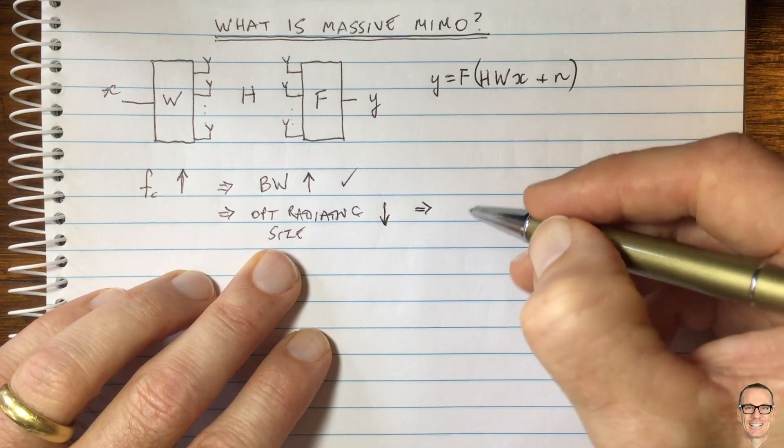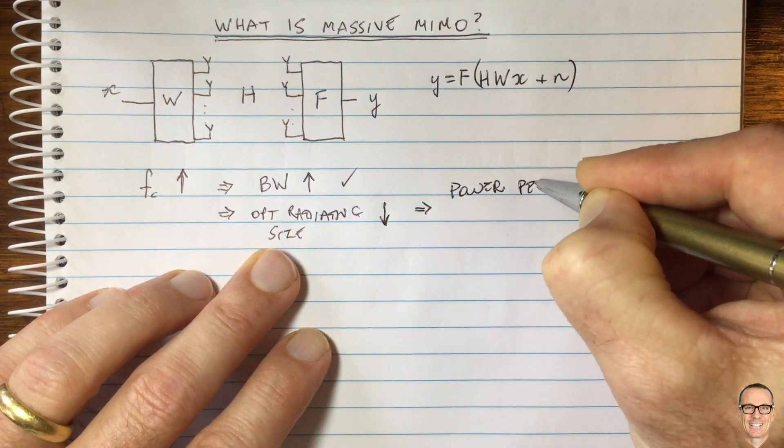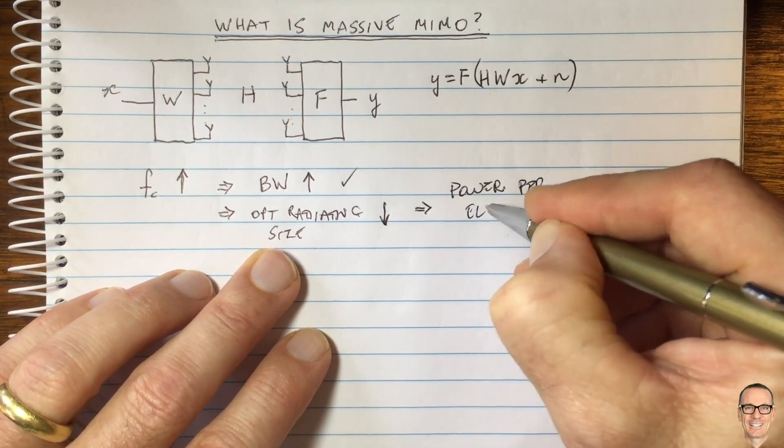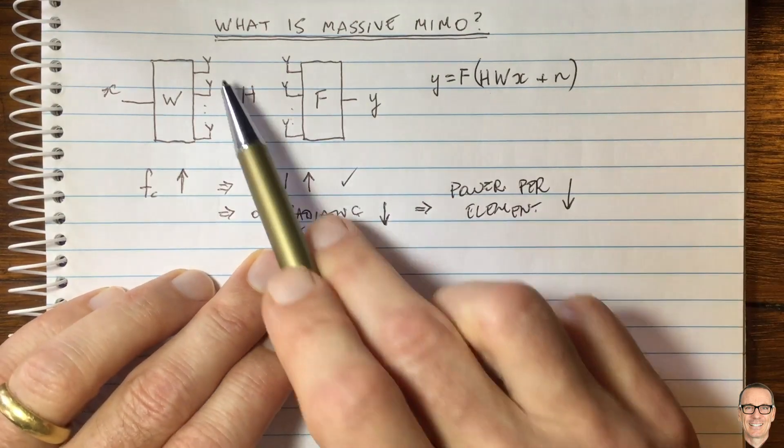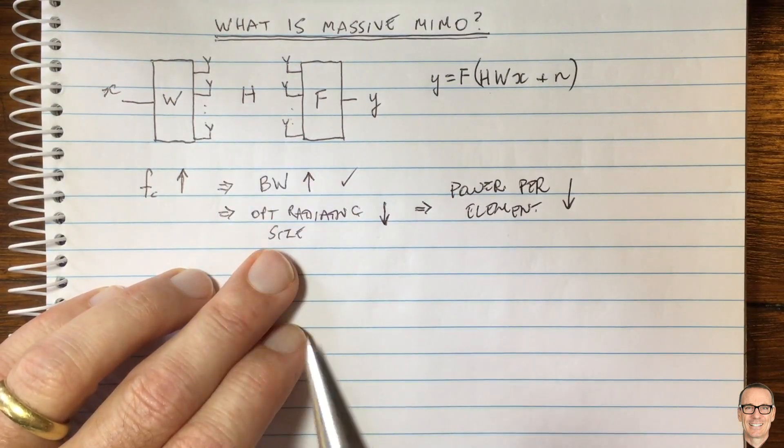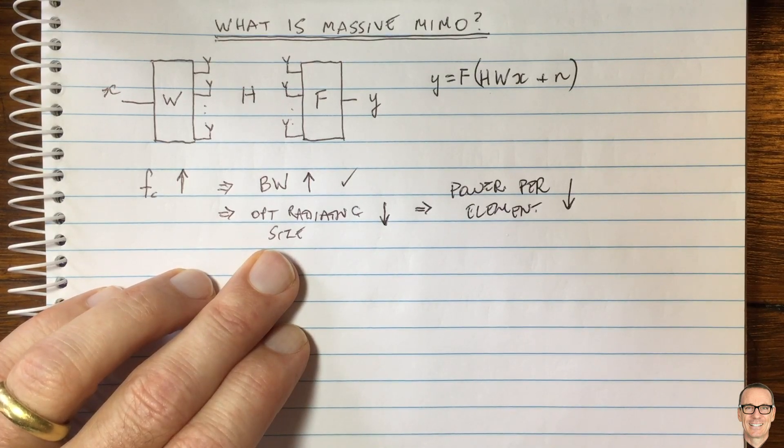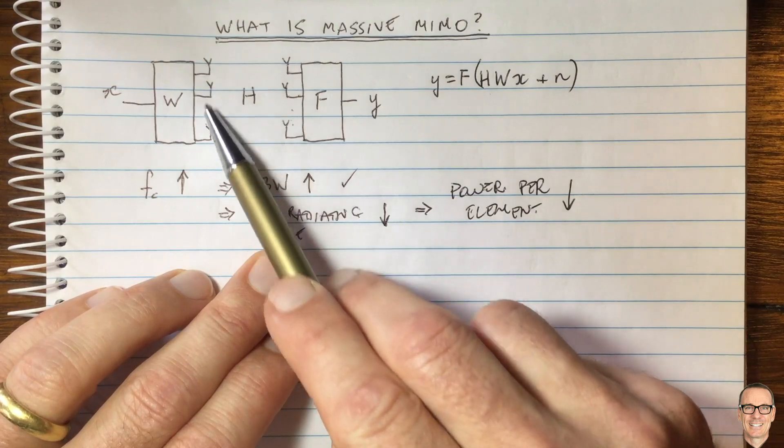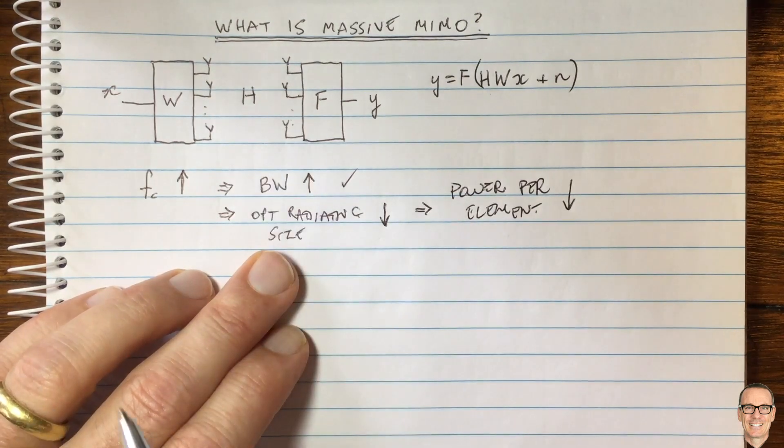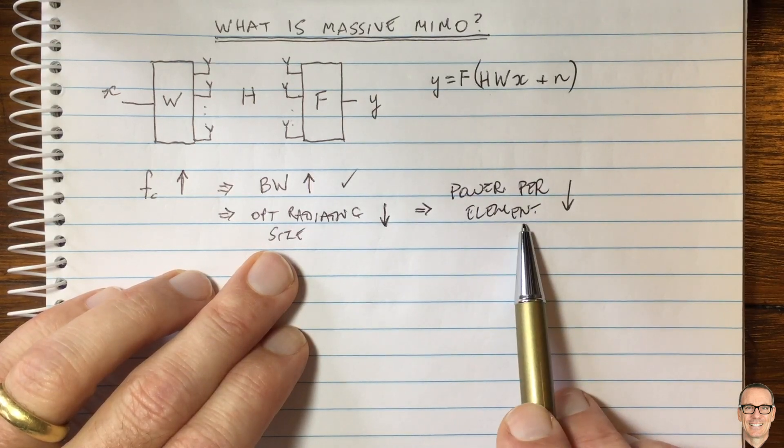This means that the power per element that you can transmit with also comes down. Smaller antenna elements means you're dealing with smaller pieces of metal, so you can't put so much power through those pieces of metal. For example, sometimes if you're trying to transmit over a long distance with sufficiently small pieces of metal, you could end up melting them. There's a limit on the power per element.